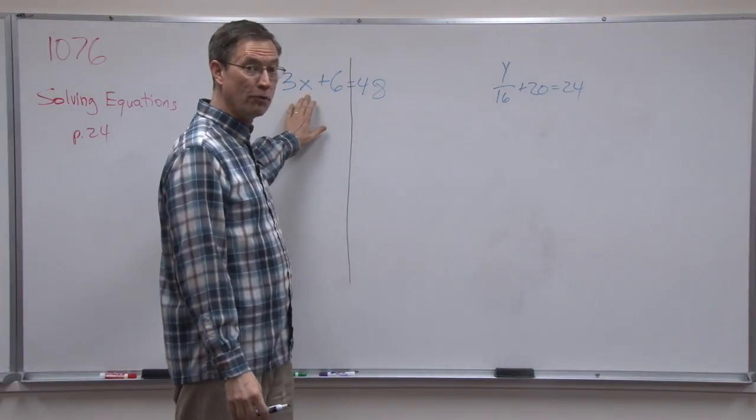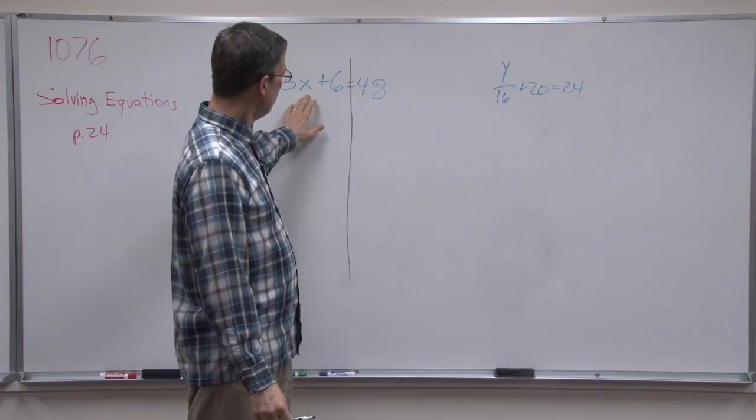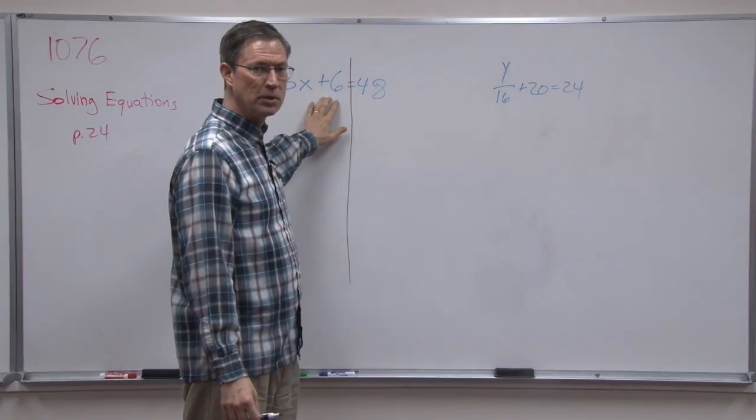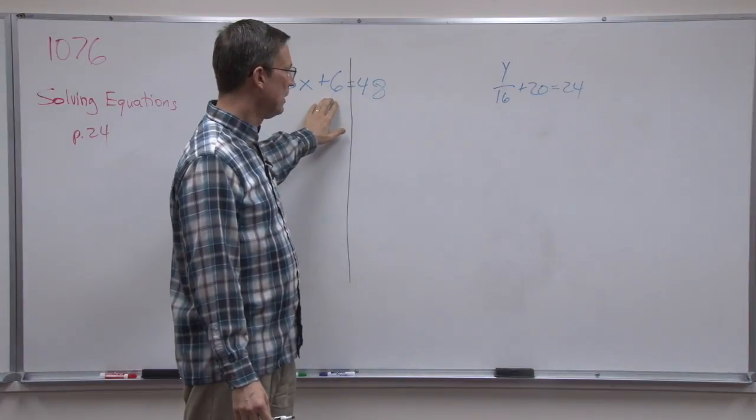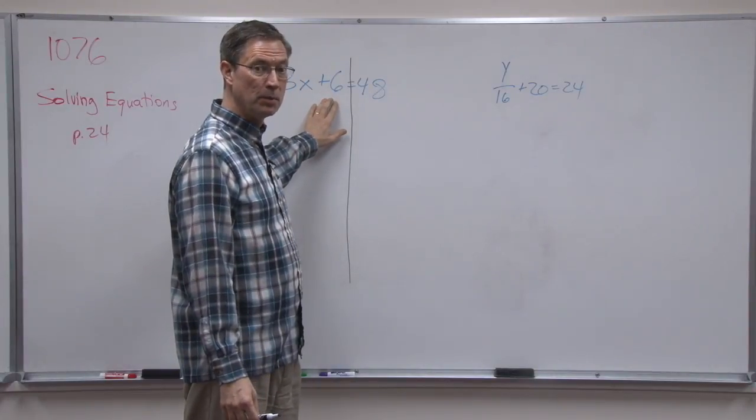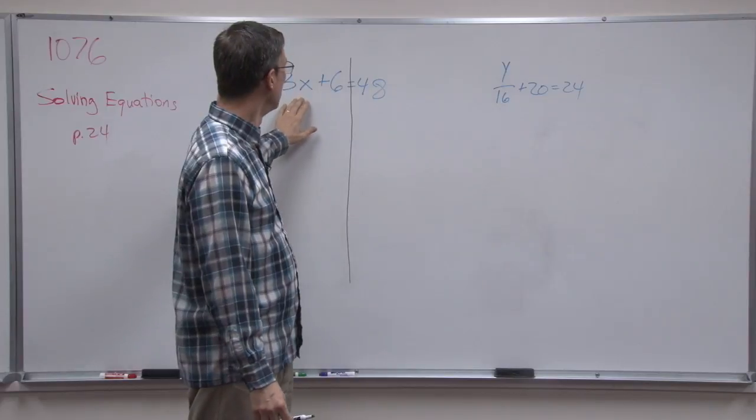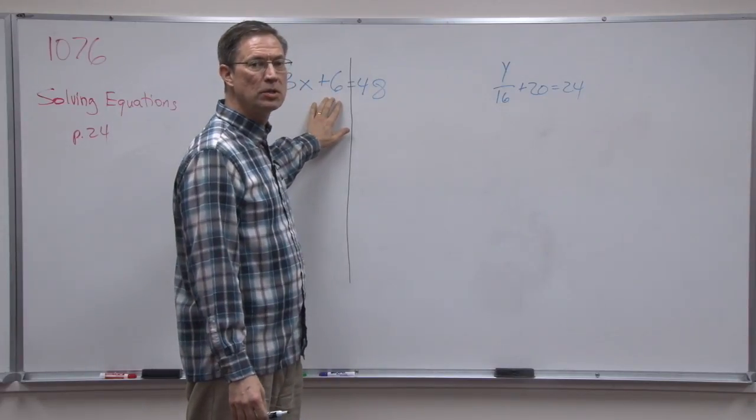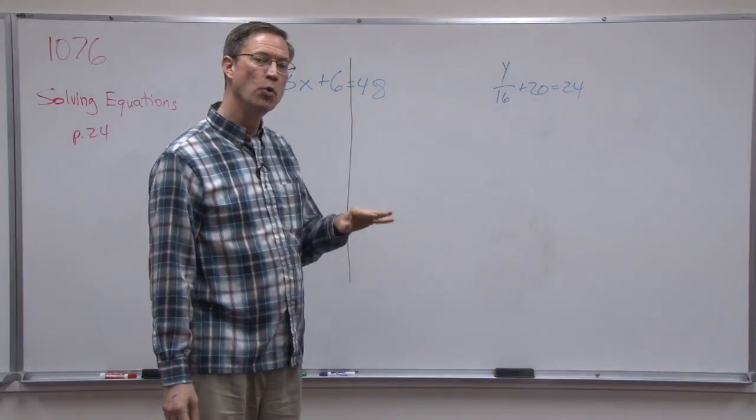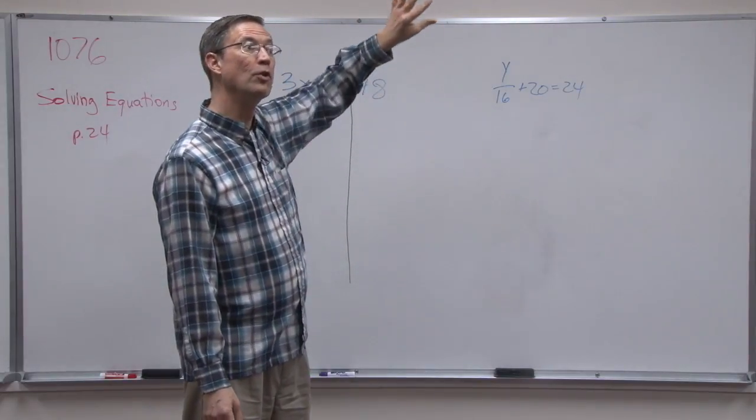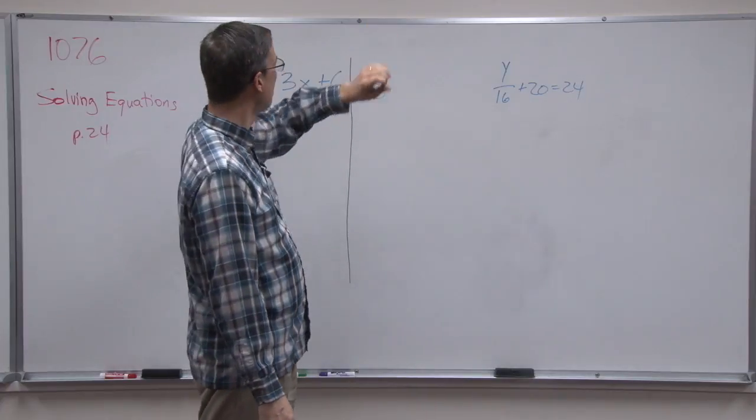The other main rule of algebra is I'm trying to solve for the variable, okay, the letter. And so I want to undo, the PACE calls it the inverse operation, do the opposite operation of whatever's being done to the variable in order to isolate the variable. We always undo the addition or subtraction before we undo the multiplication or division. So it's kind of like the order of operations, but in reverse. So we start at the bottom and work up, okay?